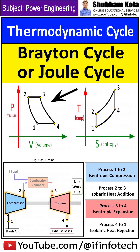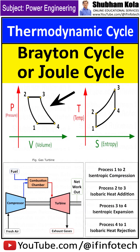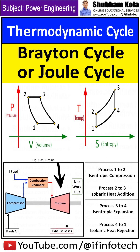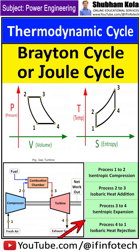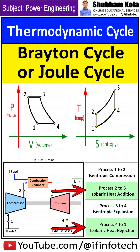In this video, we are going to learn about the Brayton cycle, or Joule cycle, which is the thermodynamic cycle upon which gas turbines work. The Brayton cycle consists of four thermodynamic processes: two adiabatic and two constant pressure processes.